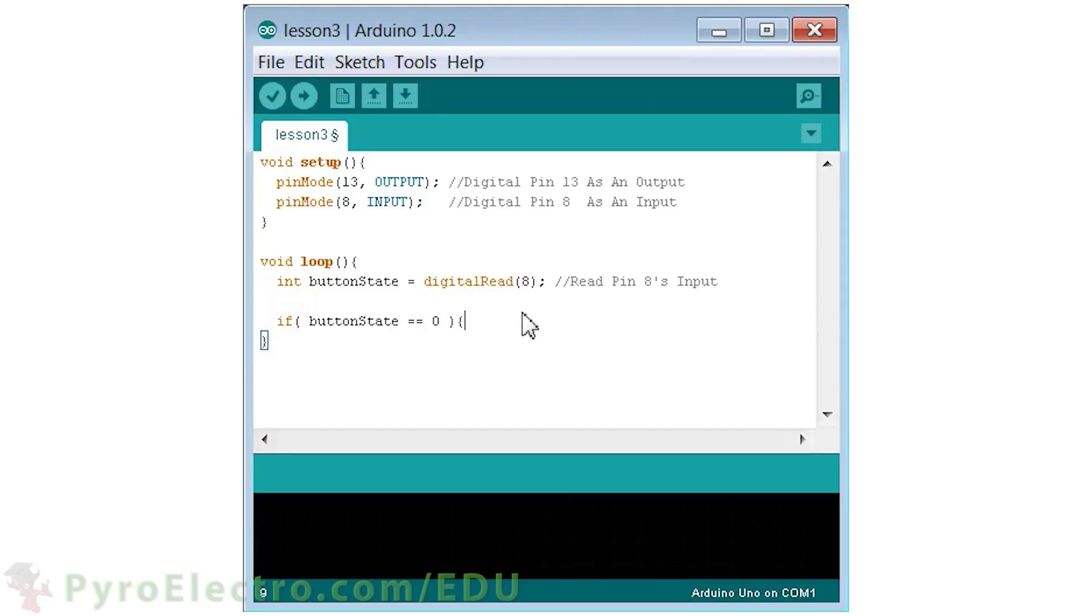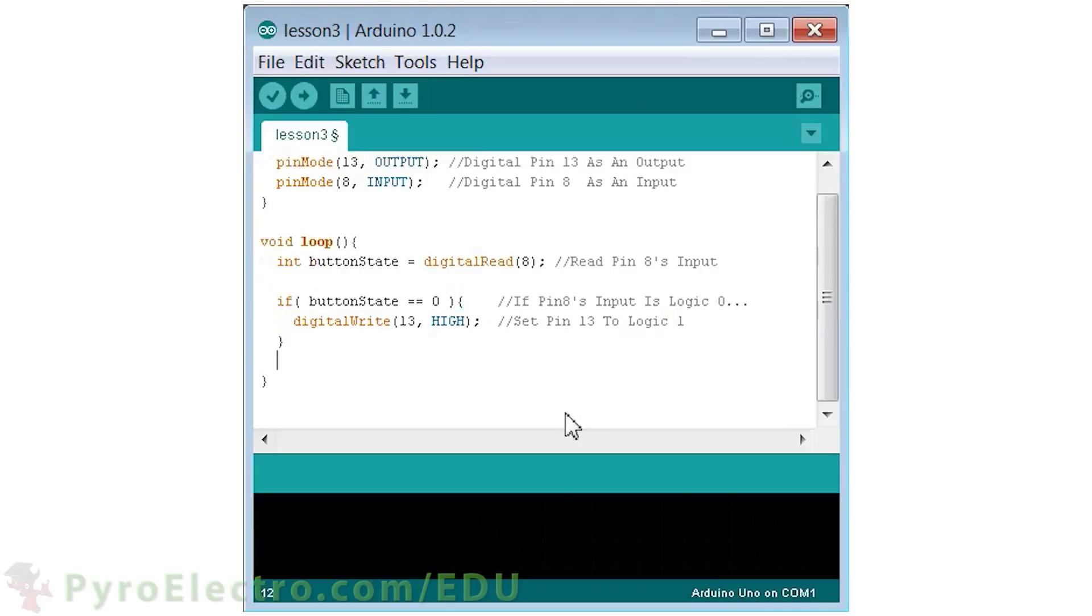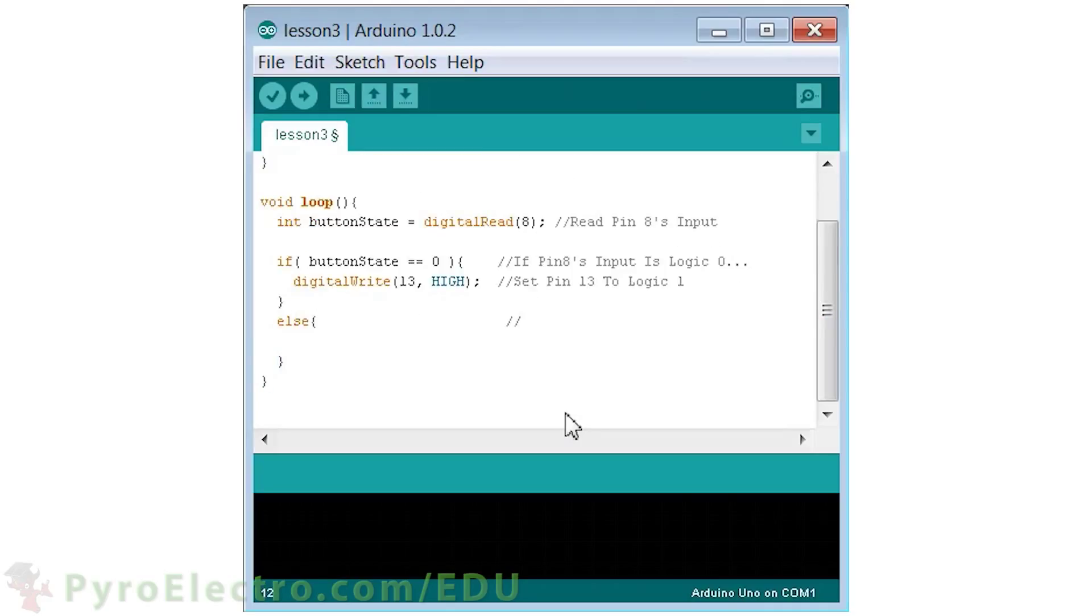And now, we'll test the input using a conditional if-else statement. We test if the button state integer is logic 0, which means the button has been pressed. Then turn the LED on. Otherwise, turn the LED off.